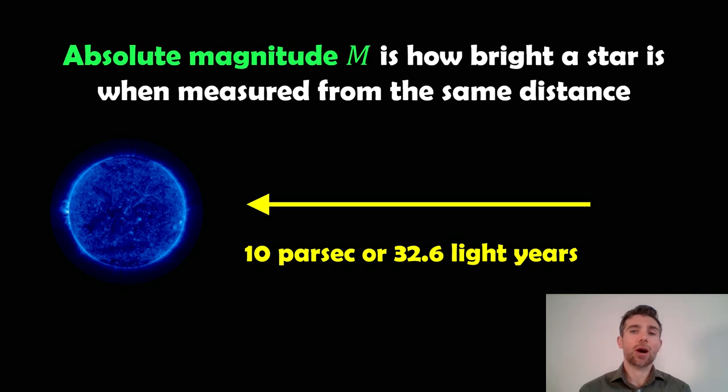Now the absolute magnitude is how bright a star is when measured from the same distance. And it's about 10 parsecs. That will be how bright a star appears to be from that same distance each time.